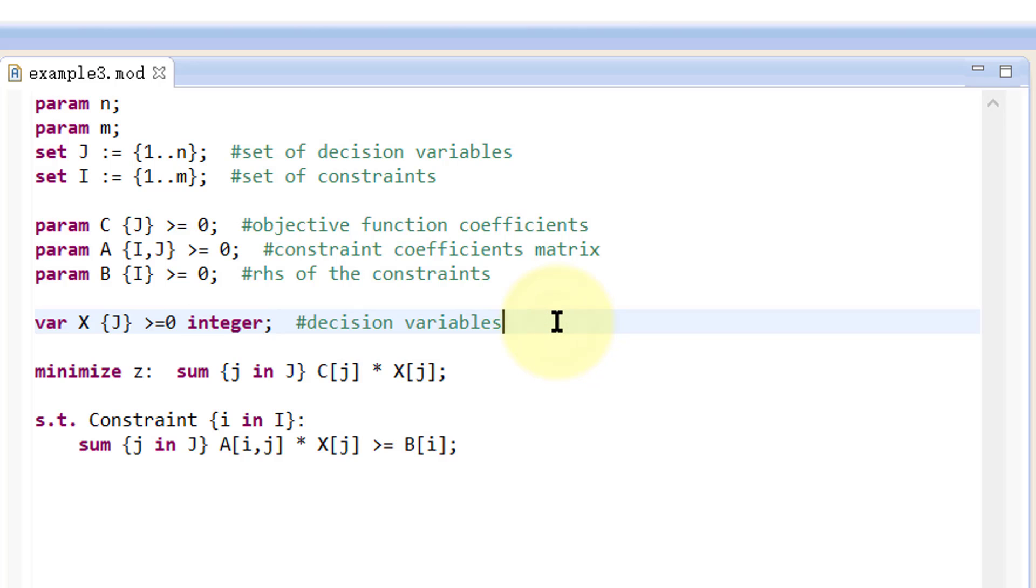If we are modeling a mixed integer programming problem, we need to add this keyword to only those variables that are required to be integers. For other variables, we just leave this keyword out.